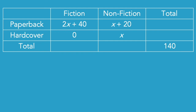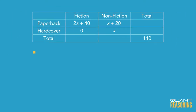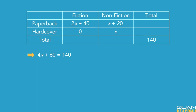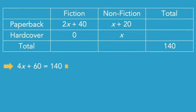Before I read the rest of the question, I notice that there is an inference I can make now, because I have the four mutually exclusive cells filled in: 2X plus 40, X plus 20, 0, and X. Adding all of those together should give the total, which is 140. So building an equation, I have 4X plus 60 equals 140. Subtracting 60 from both sides gives 4X equals 80, and dividing both sides by 4 gives X equals 20.